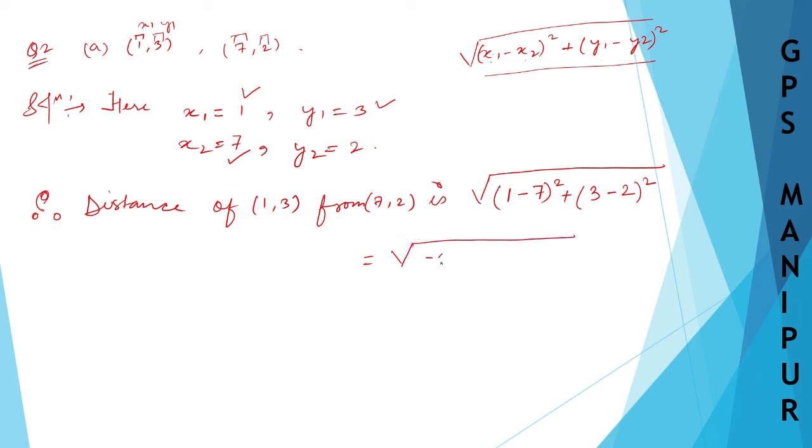1 minus 7 is -6 whole square, plus 3 minus 2 is 1 square. 6 squared is 36 plus 1, and root over 36 plus 1 is 37, and I hope this is the answer.